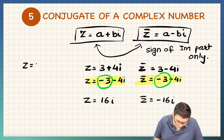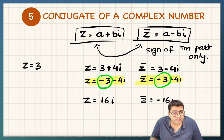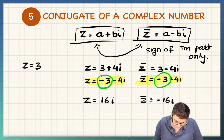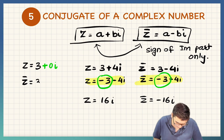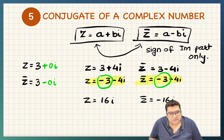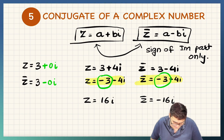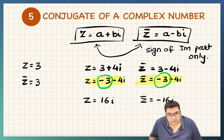And if z is say 3, observe that it has no imaginary part, but I can write it as 3 plus 0i. So z-bar is going to be 3 again, because even if the sign of the imaginary part changes, that is not going to make any change to the answer. So this is 3 and this is still 3.